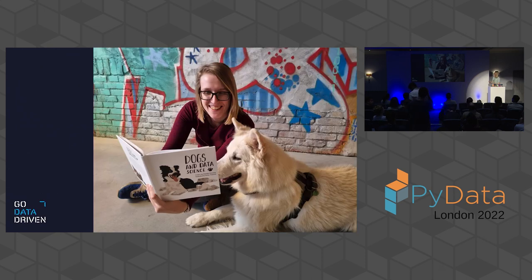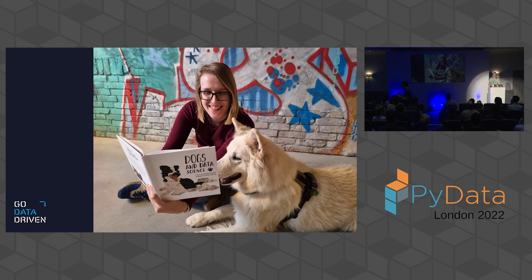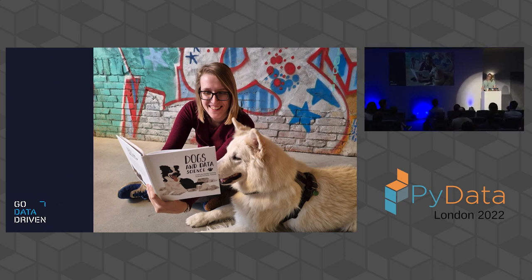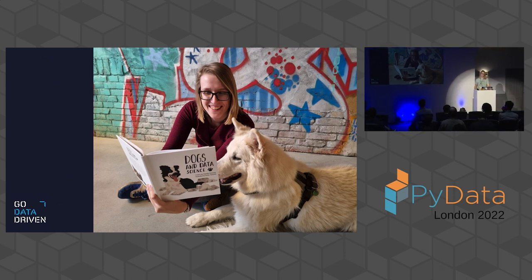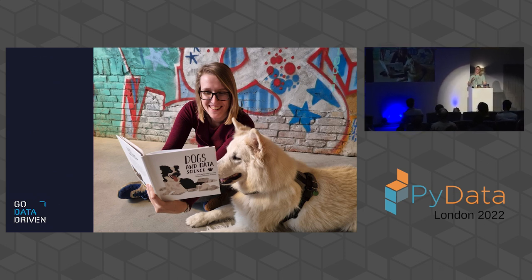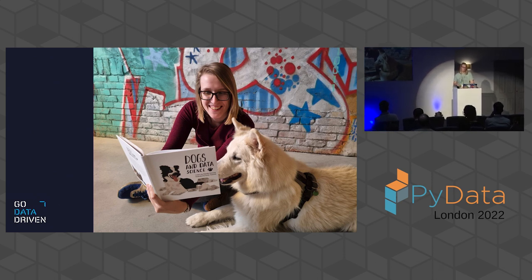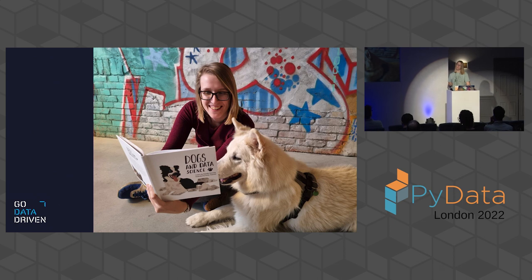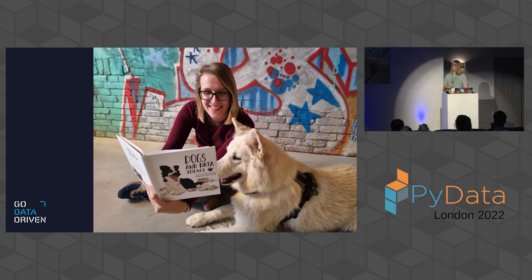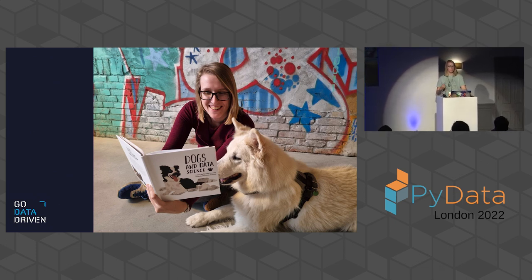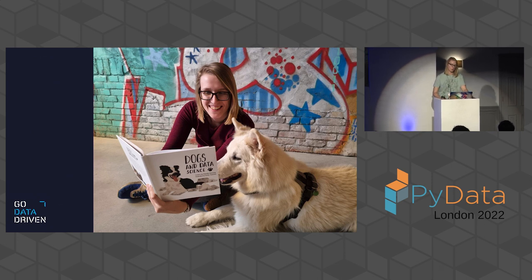A little bit about myself. I work for Go Data Driven, where I'm a data science educator — I teach data science trainings to anyone who's willing to listen and pay. Being a data science educator got me thinking about how I was taught data science and machine learning in the first place. I studied artificial intelligence at the University of Amsterdam, and when I was taught machine learning it was very focused on the algorithms and the models.